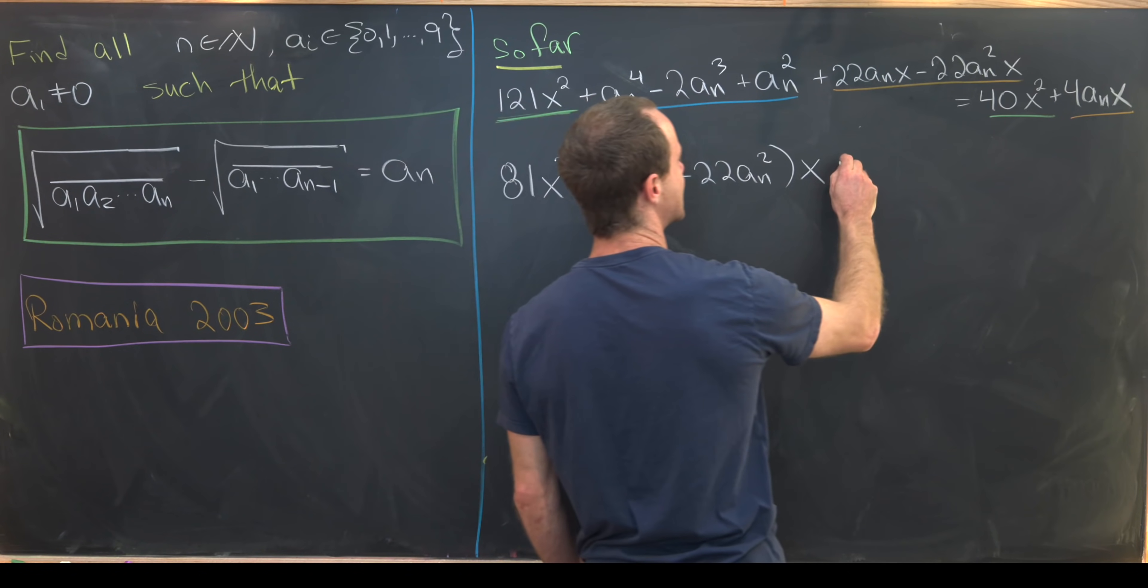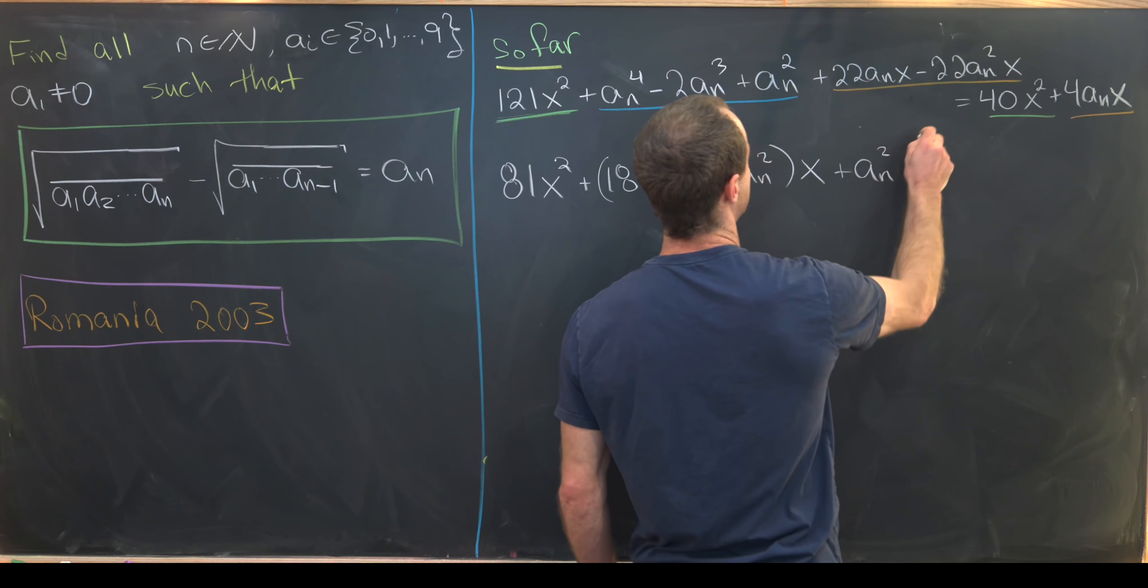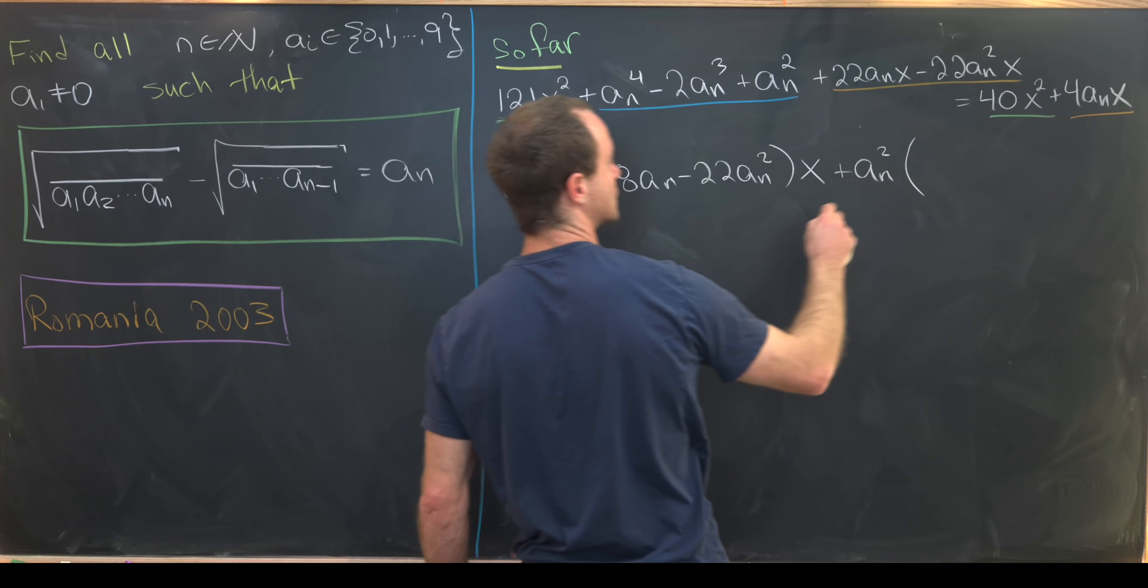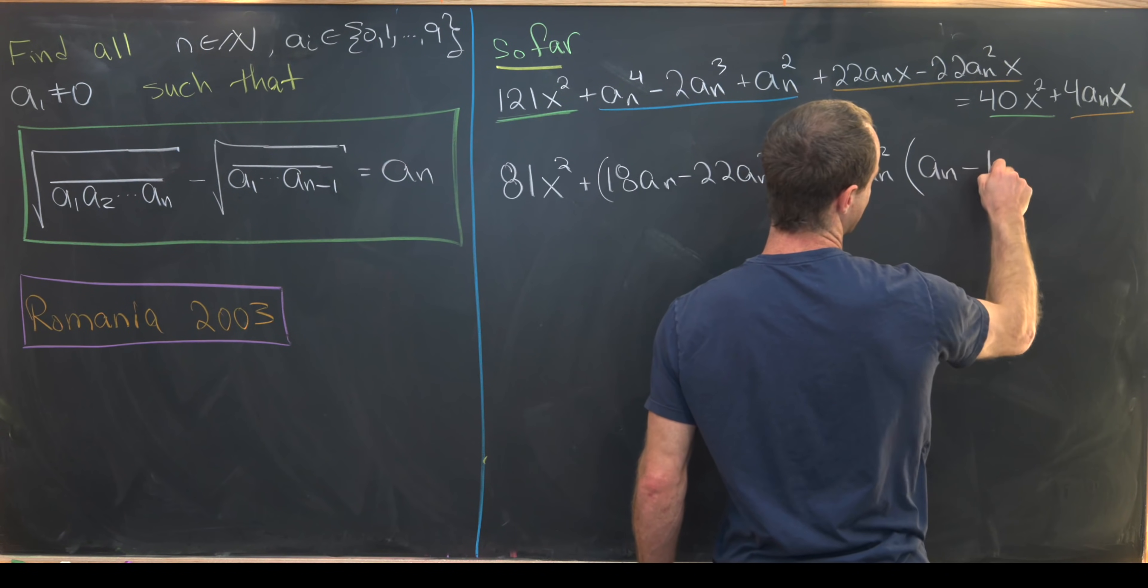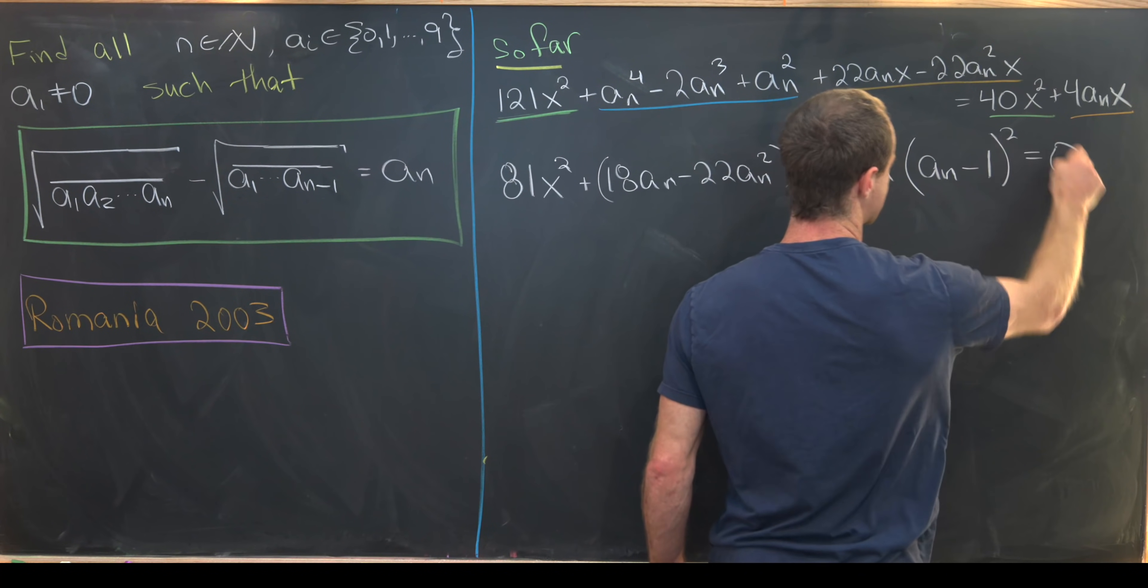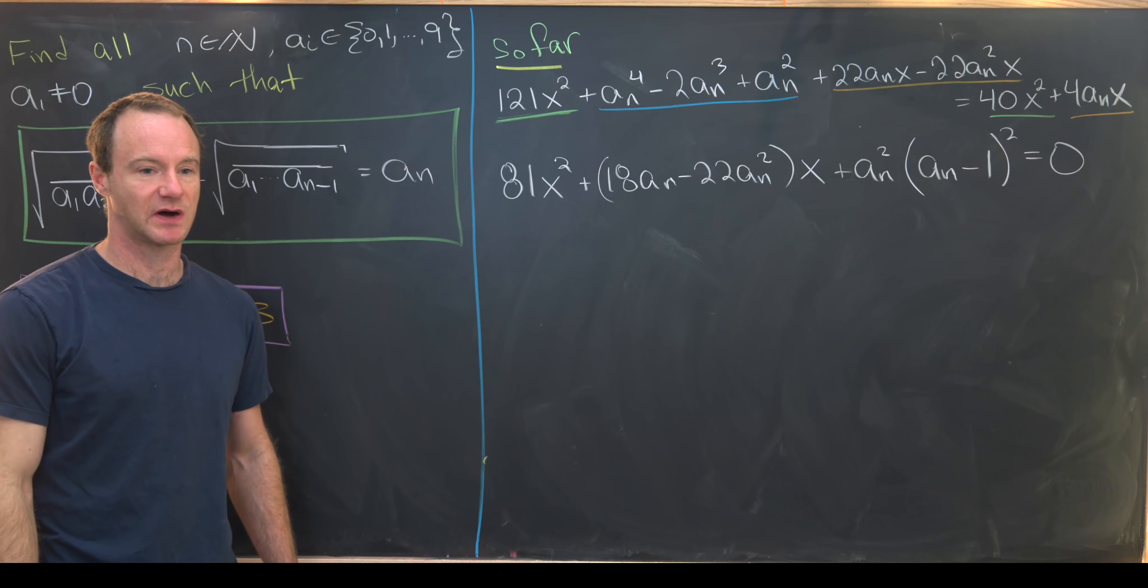And then next we've got this thing in blue. But notice we can factor an an² out of that, and we're left with an minus 1 quantity squared. So I'll let you guys check that, but that's not too hard to see. Okay, so now we're down to this spot.